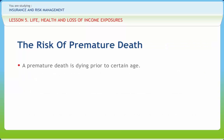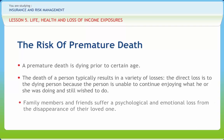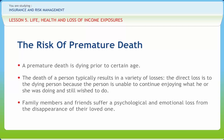A premature death is dying prior to a certain age. The death of a person typically results in a variety of losses. The direct loss is to the dying person because the person is unable to continue enjoying what he or she was doing and still wished to do. Family members and friends suffer a psychological and emotional loss. However, the economic loss is chiefly felt by people who depended financially on the deceased — for example, spouse, children, and parents — who lost the future income that would have been earned. Another common type of loss is that of a partnership that lost a key partner, a situation that may endanger the continuation of the business.